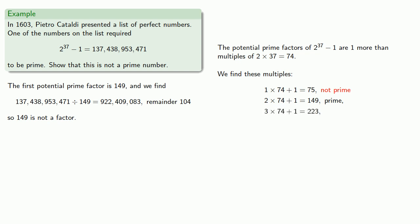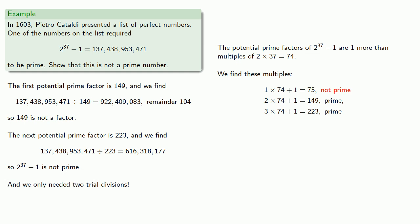3 times 74 plus 1, that's 223, which is also prime, and so our next potential prime factor is 223, and we find... since this number is divisible by 223, we know that 2^37 - 1 is not prime, and here's the important thing, we only needed two trial divisions. And that means we have a way of avoiding these lengthy computations that Fermat didn't want to engage in.